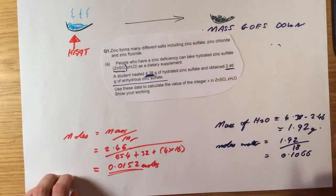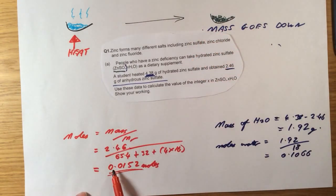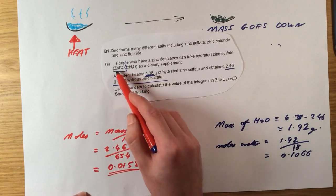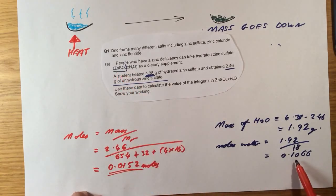So what is this telling me? Well, this is telling me that for every 0.0152 moles of the ZnSO4 part I have, I've got 0.1066 of the water.